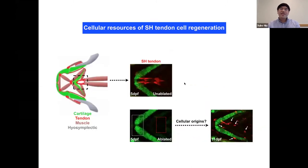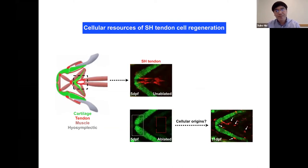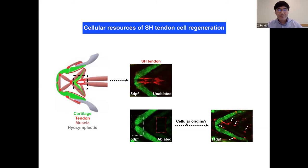The next question was to look for the cellular resource — where are the new cells from and what is their identity? To study this, we used the sternohyoideus tendon as a model and focused on two regions: the first is the cartilage attachment site, and the second is the muscle attachment site. We were trying to determine where the new cells come from.